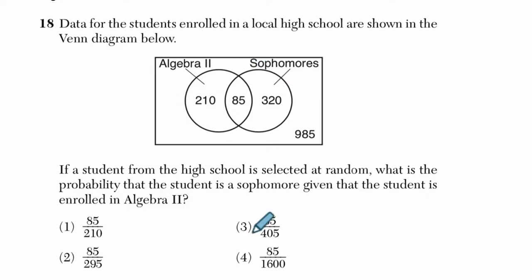So we have a Venn diagram here, and the first thing I want to know is how many students are we looking at? Well, I'm thinking that there are this many students.